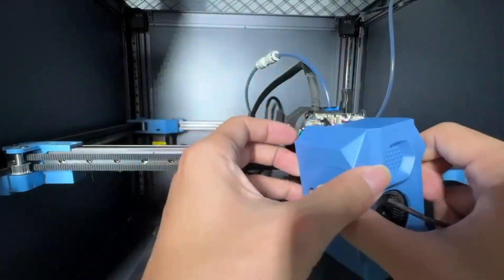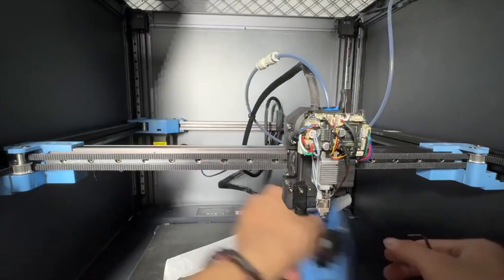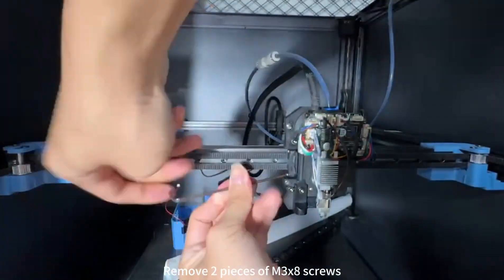Remove the print head cover. Remove two pieces of M3 by 8 screws.